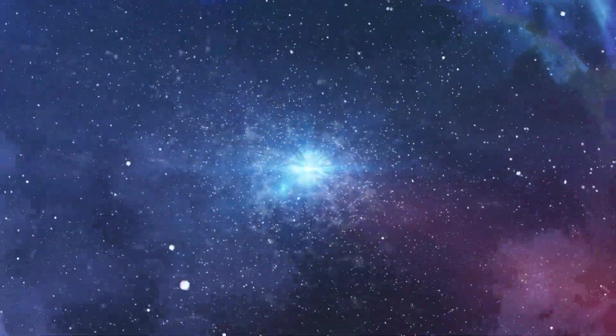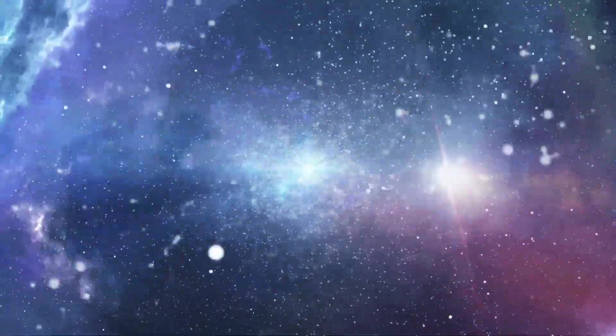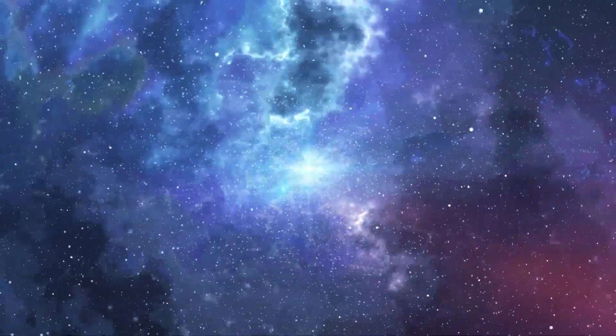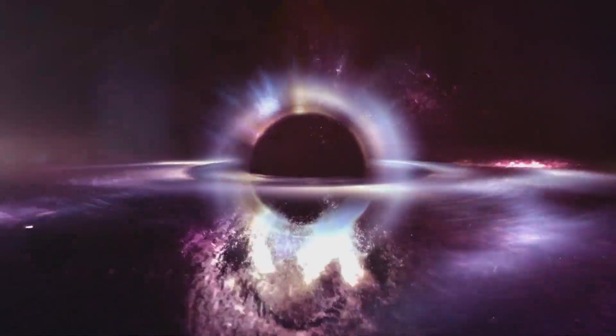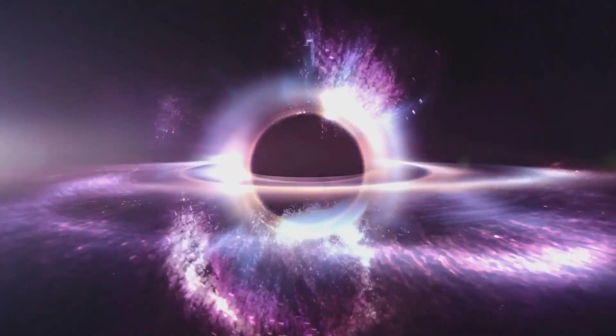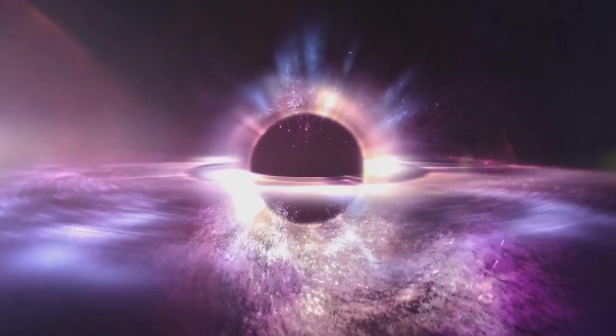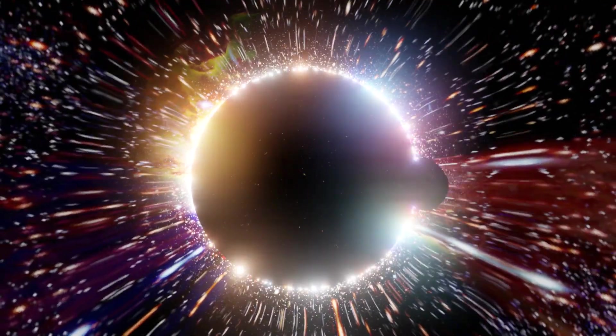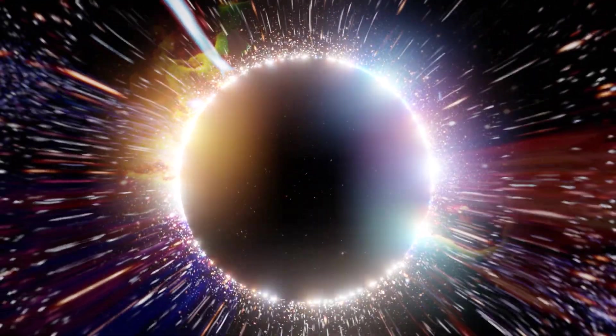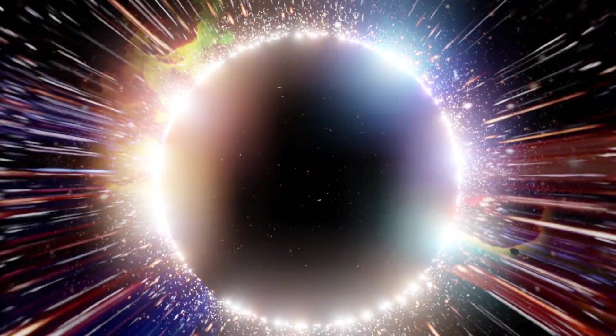In the wake of this cosmic detonation, the core continues to collapse. If the core's mass is large enough, no known force can counteract the pull of gravity. The core contracts until it becomes a point of infinite density, a singularity. Around this singularity, space and time curve sharply, creating what we call an event horizon. Nothing can escape from within this boundary, not even light itself. This is the birth of a black hole, an object with gravity so strong that it warps the very fabric of space and time around it.